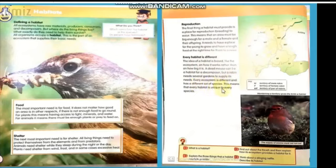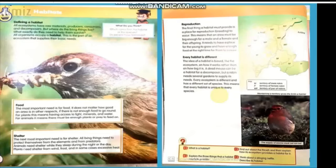Every ecosystem is different and has a different set of species. The basic idea is the same — producers, consumers, raw materials, and decomposers — but these will differ between ecosystems. Similarly, every habitat is unique to every species. The habitat of a cow is different from that of a bird; the habitat of a human is different from that of a fish.